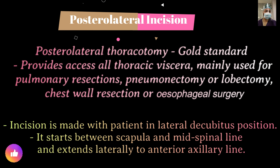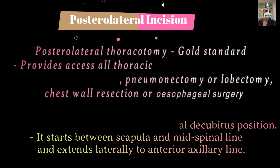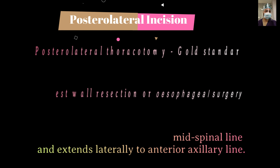The incision is made with the patient in the lateral decubitus position, starting between the scapula and the mid-spinal line and extending laterally to the anterior axillary line. The posterolateral thoracotomy is the most common and patient-friendly incision. Postoperative morbidity is less because it is muscle-sparing — no major muscles are cut — allowing rapid and better recovery compared to anterolateral thoracotomy.